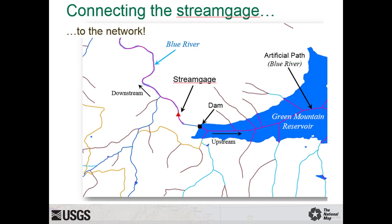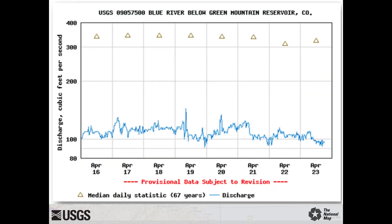A stream gauge in this Colorado example is now tied to the NHD network. When other features are added as events to NHD, their attribute information is integrated with NHD, adding geospatial context to stream flow data and enabling a range of applications. This image shows average water flow at the stream gauge, which is information that can be added to NHD at this location.